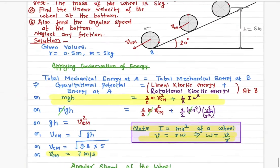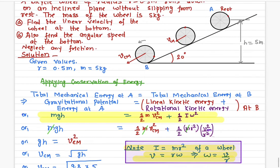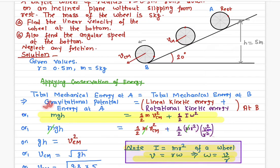Let's write down the conservation of energy equation. The total mechanical energy at point A equals the total mechanical energy at point B. At point A, it has only gravitational potential energy since it is not moving. At point B, it has only linear kinetic energy plus rotational kinetic energy. We choose point B as our reference level, so there is no gravitational potential energy there.